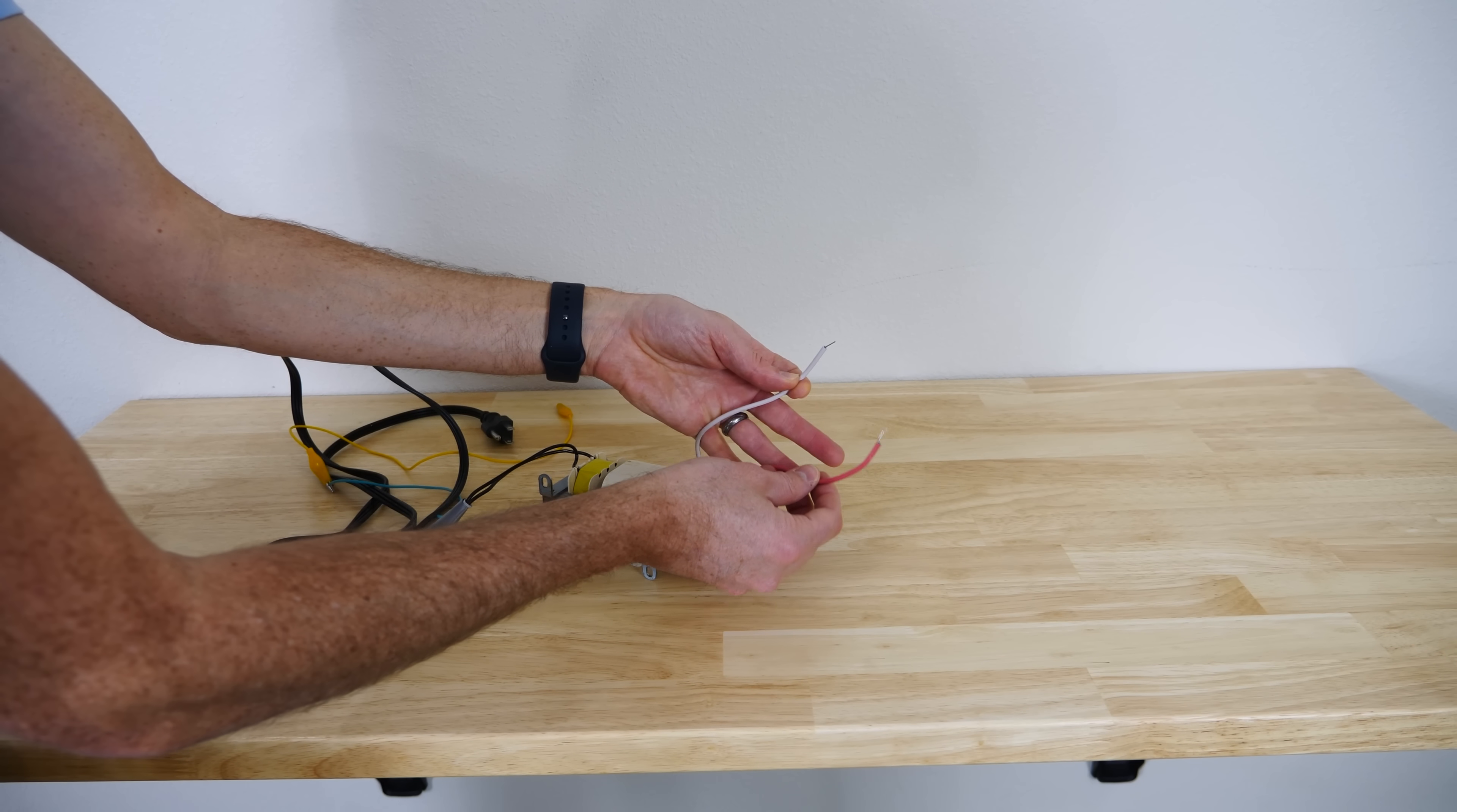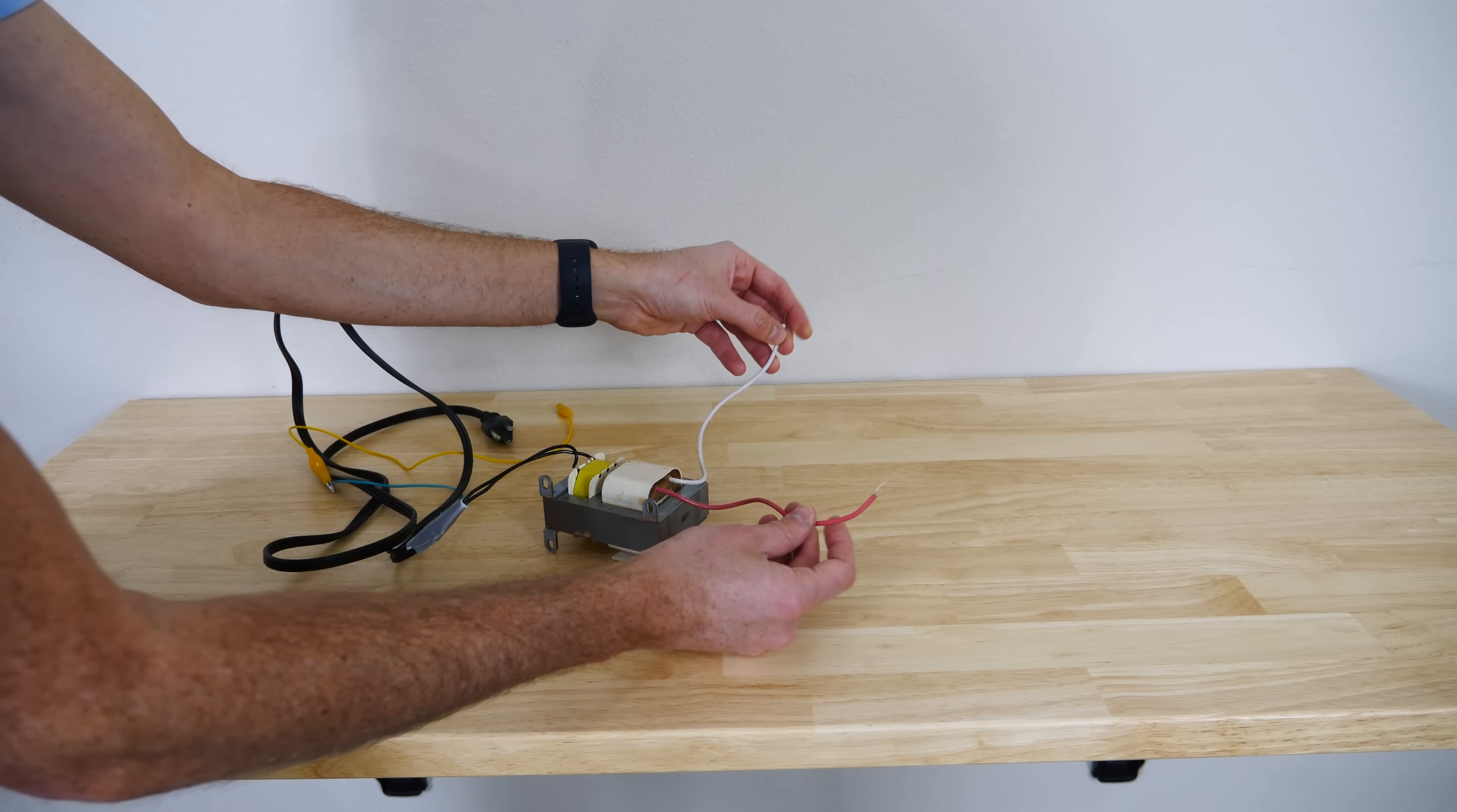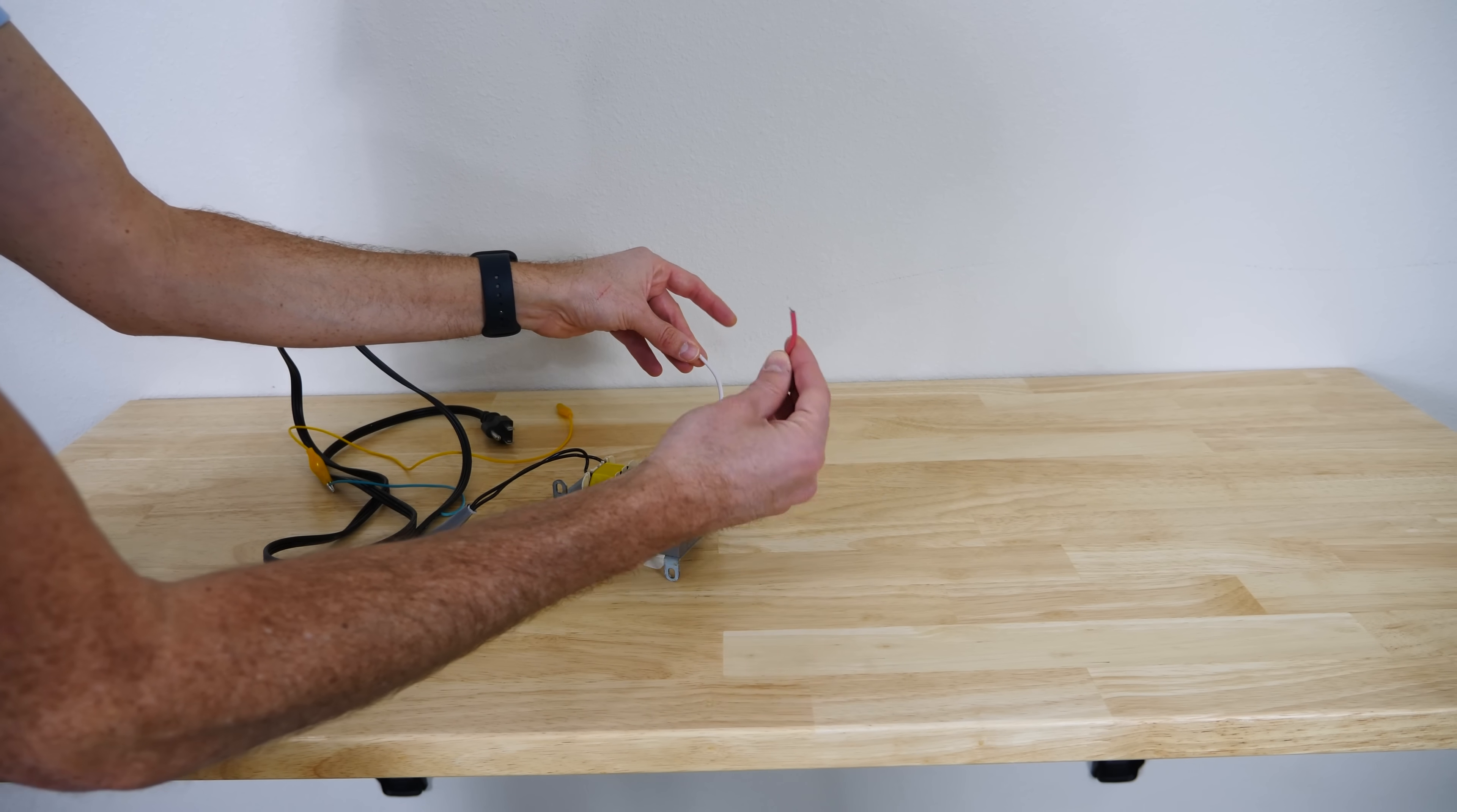This is AC voltage so the current is going to be alternating between these two wires. What I need to do is ground one of these wires so that I only have one at high voltage relative to the ground.